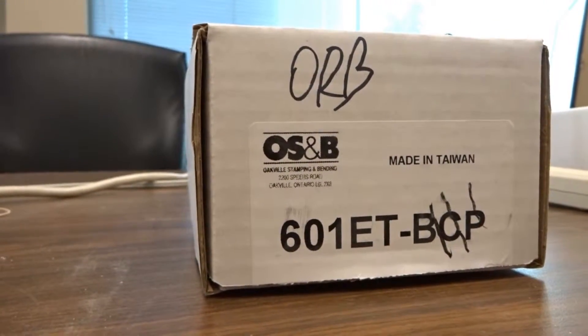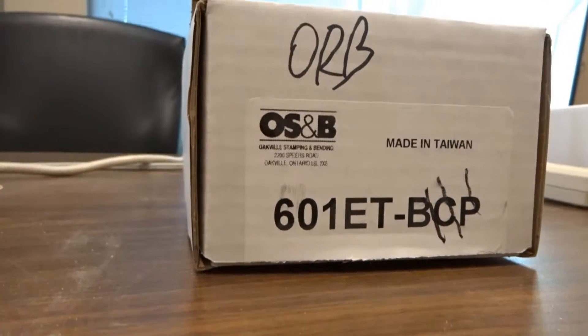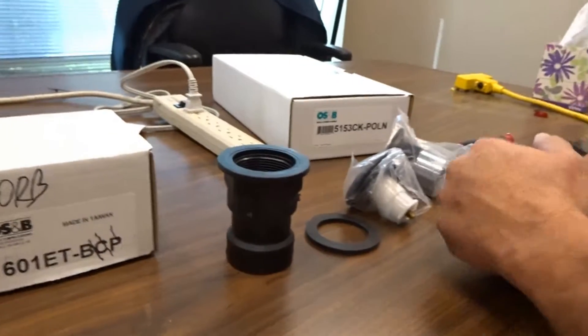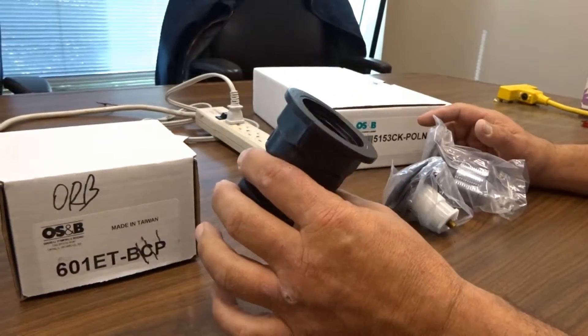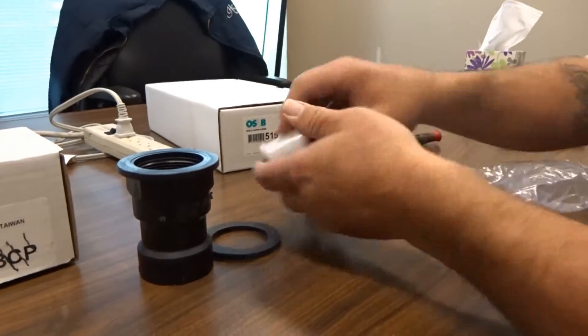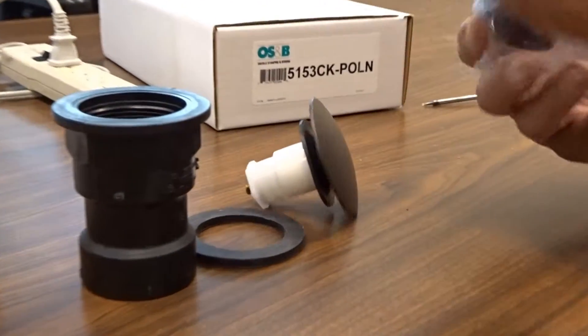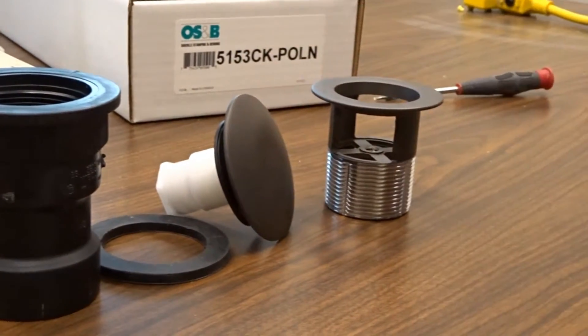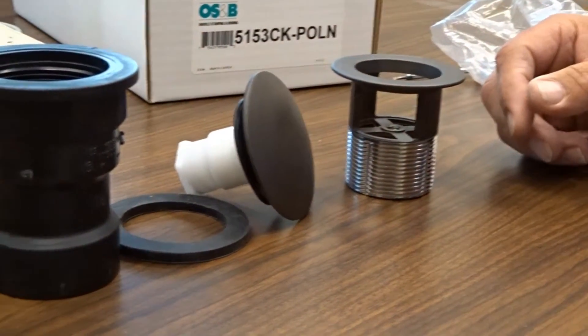Okay, this is your pop-up drain for your integral drain system. In the kit you have your shoe, gasket, pop-up, and your drain. This one is oil rubbed bronze.